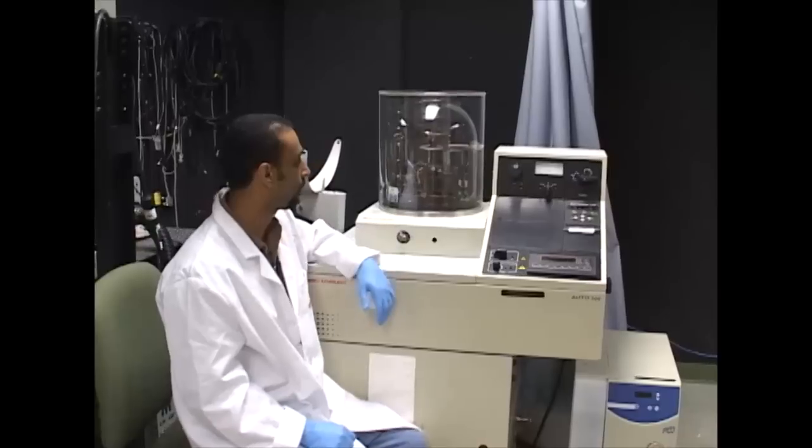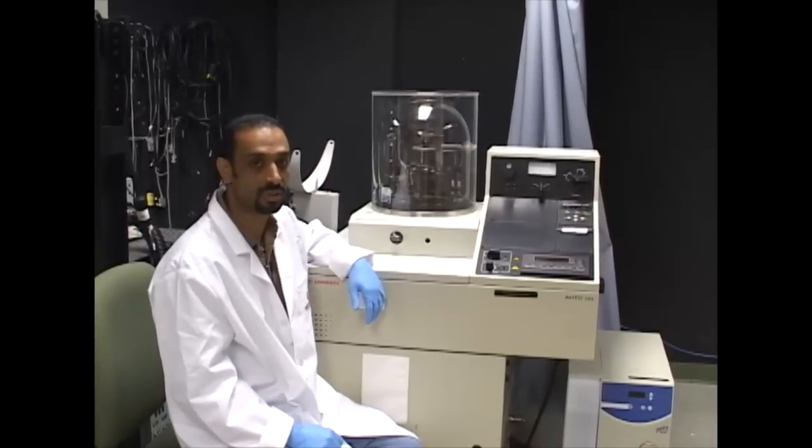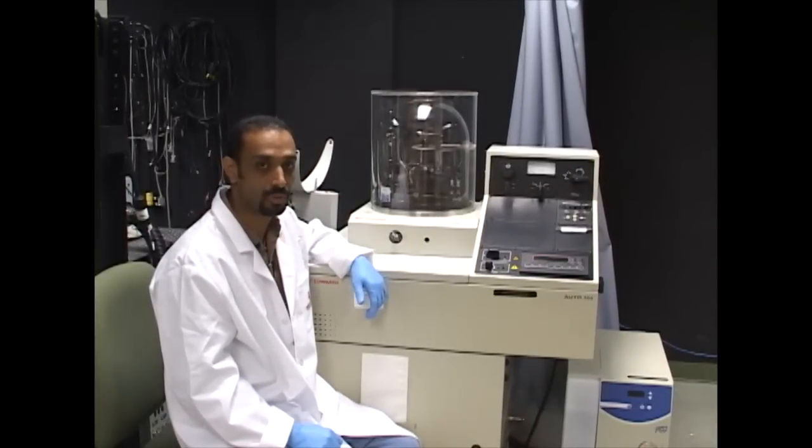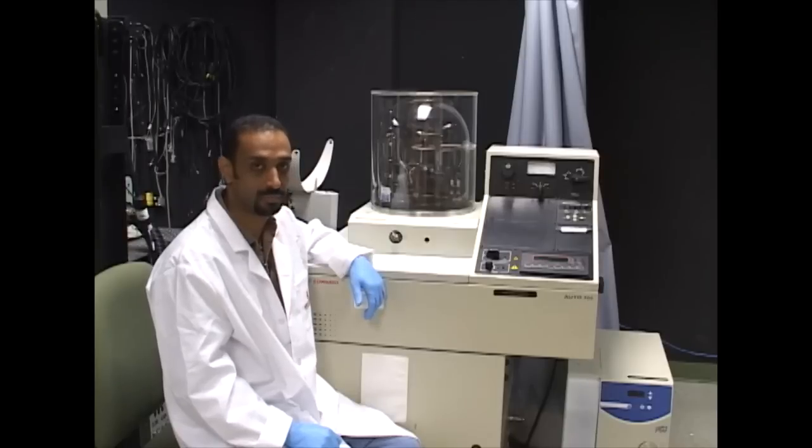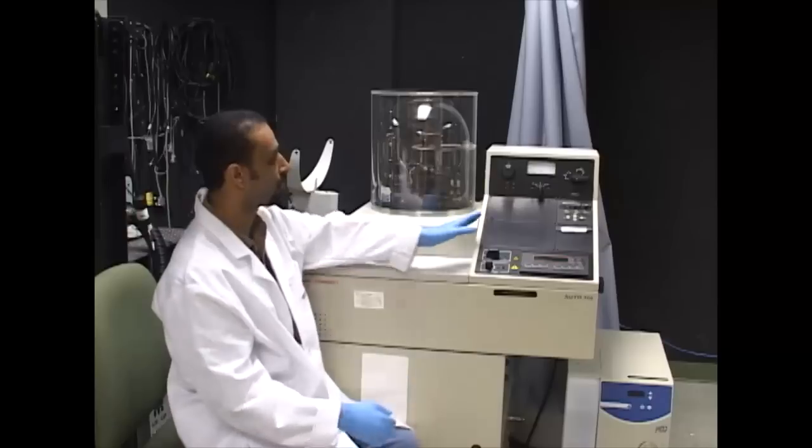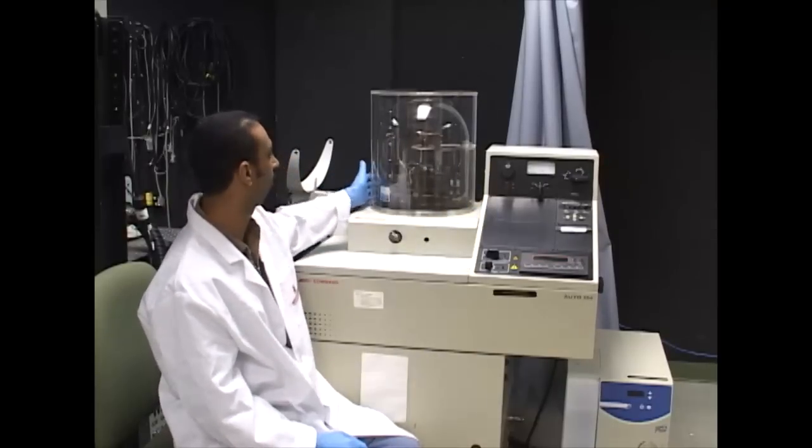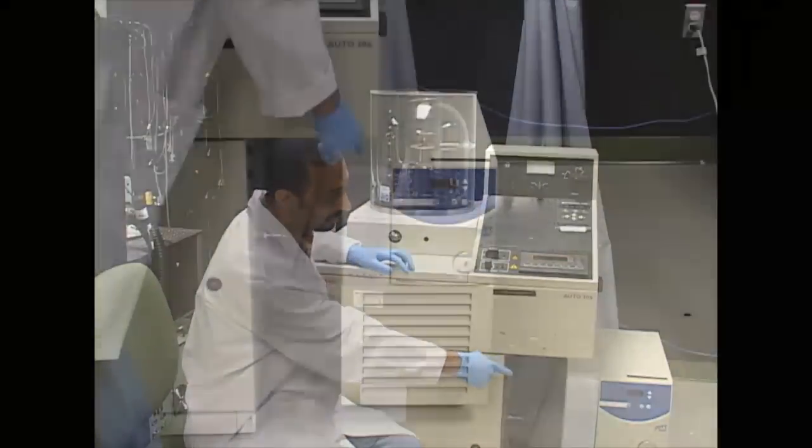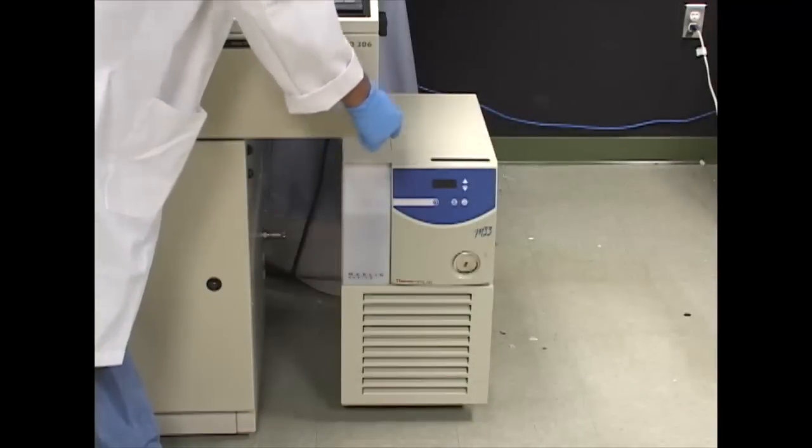This is the Auto 306 thermal evaporated deposition that we use to deposit different various types of metal onto our desired substrate. Here we have the external part which is composed of the electrical part and the assembly part, and on the side we have the chiller which is used to cool down the internal pump.